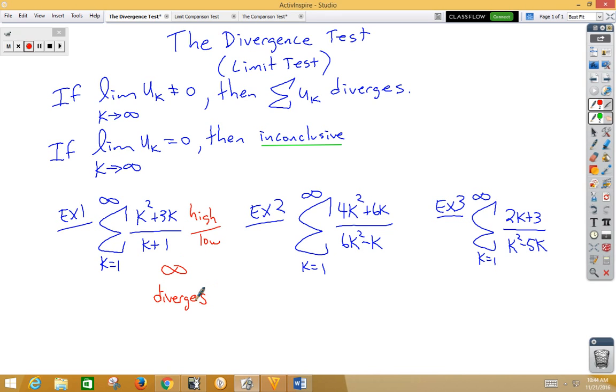In example two, end behavior—this is a same-same. And in a same-same, we take the coefficients. So four-six becomes two-thirds. Well, two-thirds is obviously not zero, so this series will also diverge.